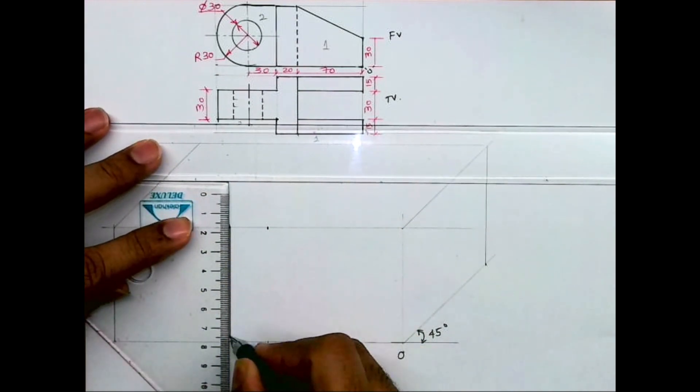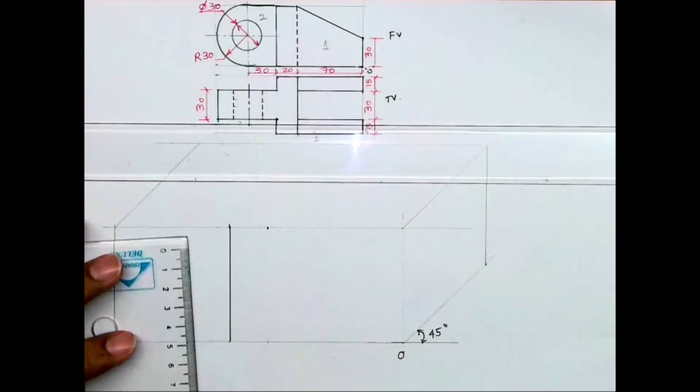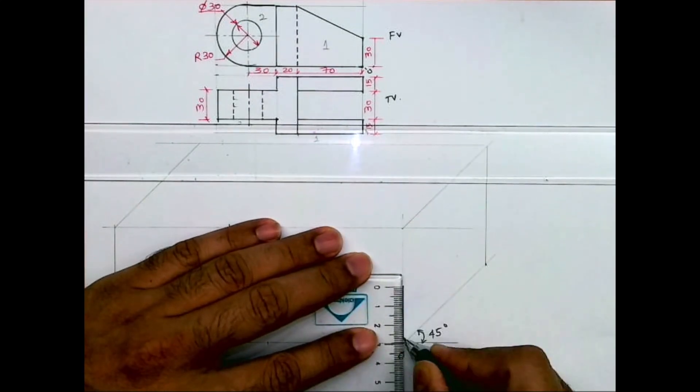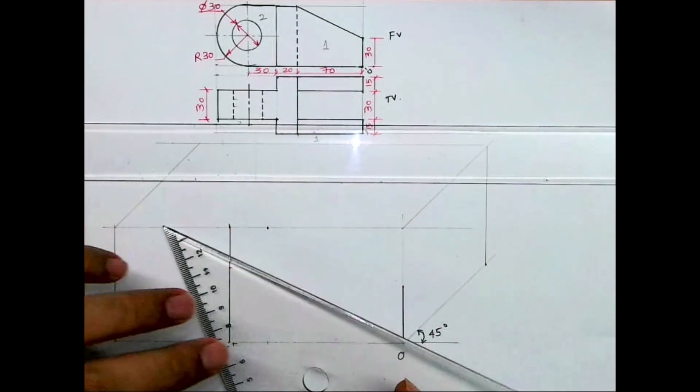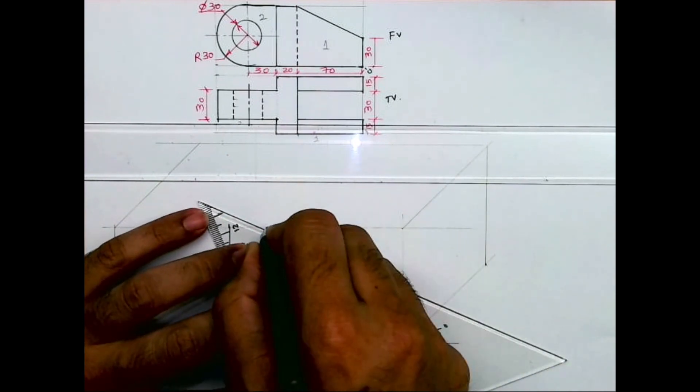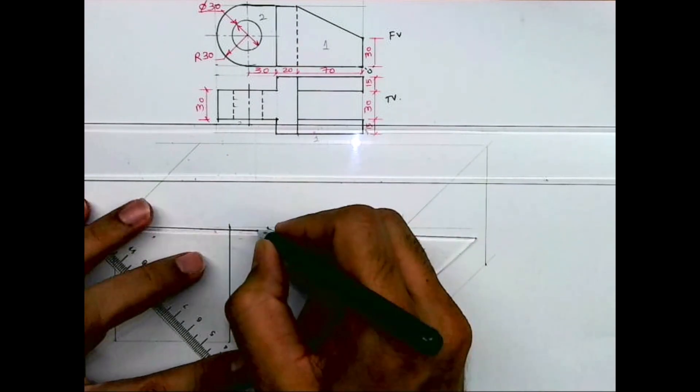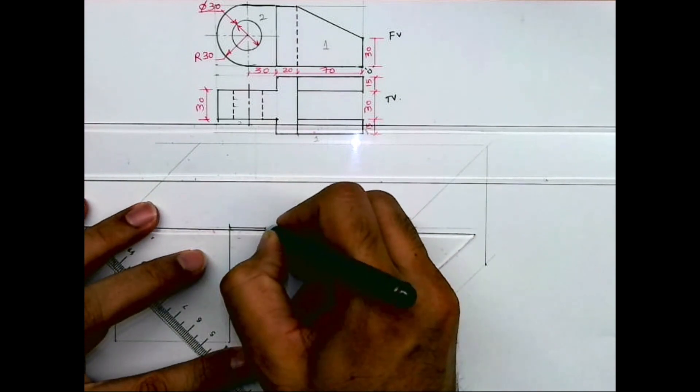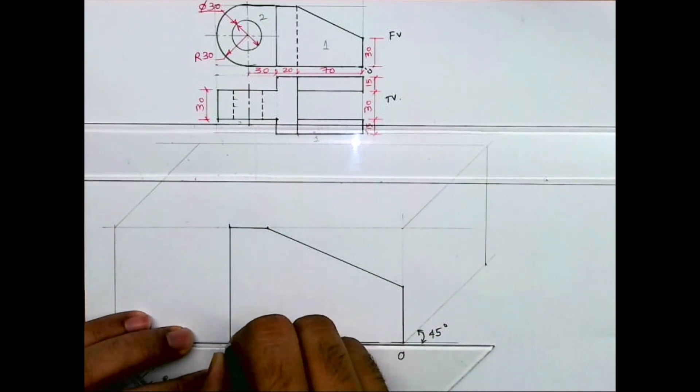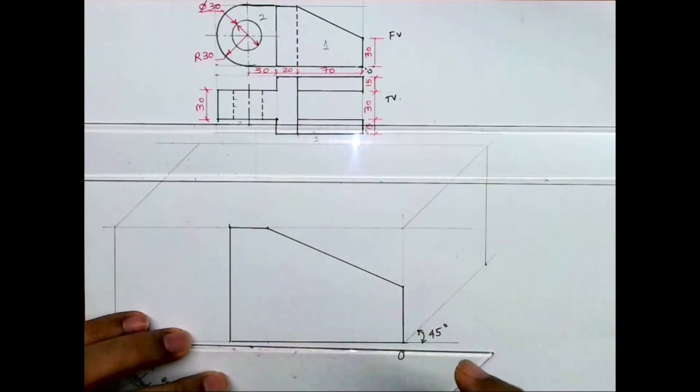Then I will draw a vertical line. This height is 30, so I will take 30 and I will join the slope. So we got part one.